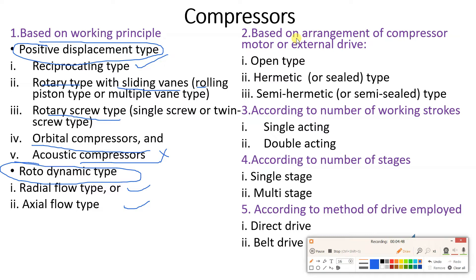The second classification is based on the arrangement of the compressor motor or external drive. The compressor is a power-consuming device, so to make it run you require either a diesel engine, petrol engine, or electrical motor. Based on this arrangement of the motor, there are three types: open type, hermetic or sealed type, and semi-hermetic or semi-sealed type.